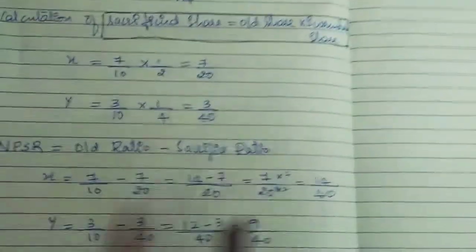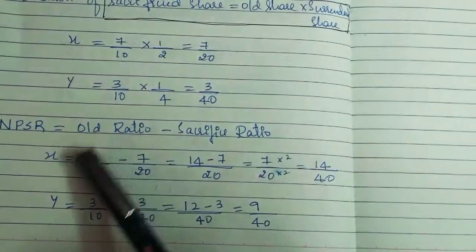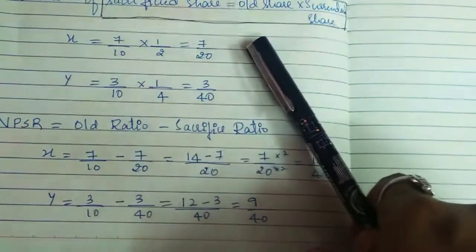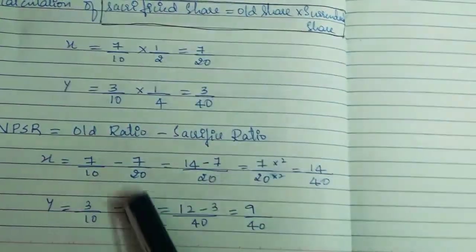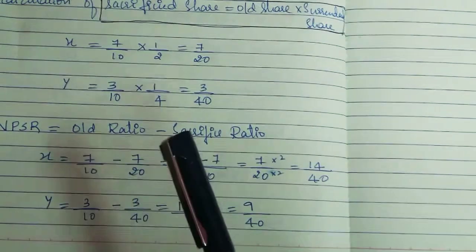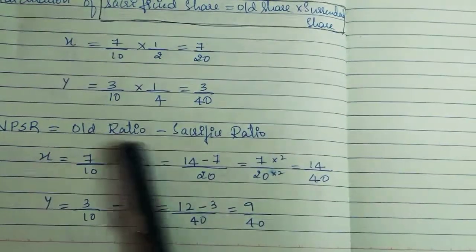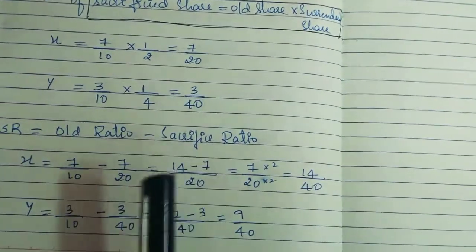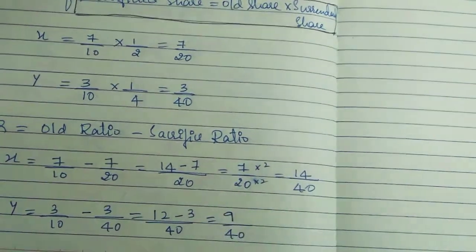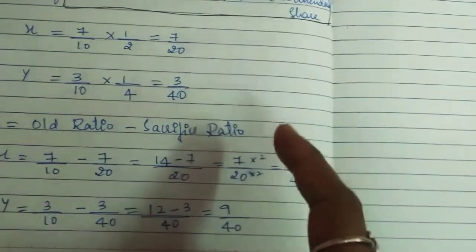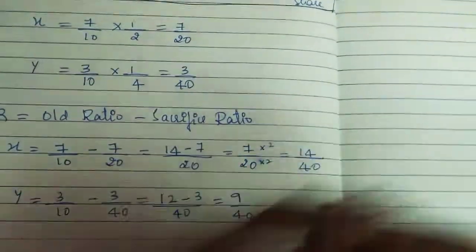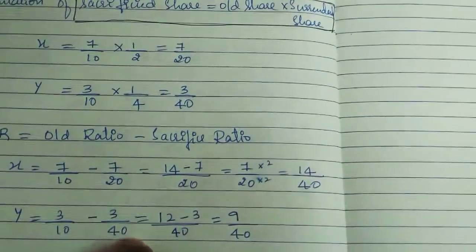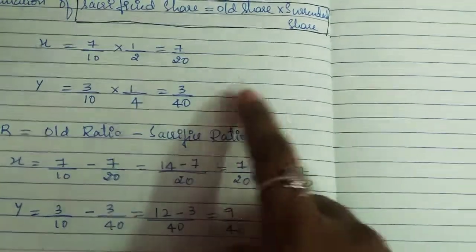Now coming to the NPSR calculation. NPSR equals old ratio minus sacrifice ratio. For X: 7/10 minus 7/20. Taking LCM of 20, we get 14/20 minus 7/20 = 7/20. For Y: 3/10 minus 3/40. Taking LCM of 40, we get 12/40 minus 3/40 = 9/40.